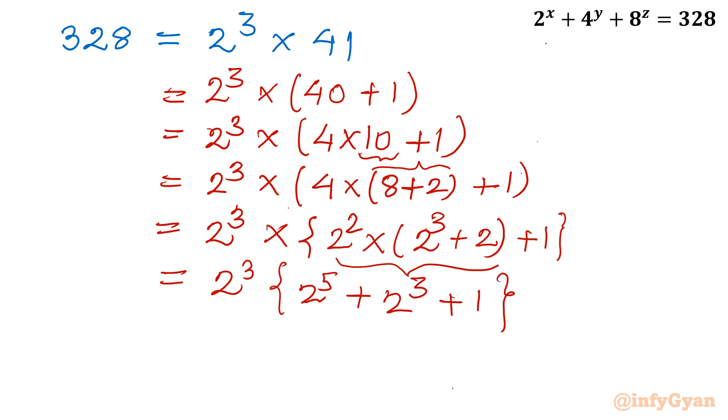Now we will expand it fully. So I can write 2^3 plus 5, that's 8, plus 2^6 plus 2^3. So ultimate conclusion is left hand side was 2^x + 2^(2y) + 2^(3z) equal to 2^8 + 2^6 + 2^3.